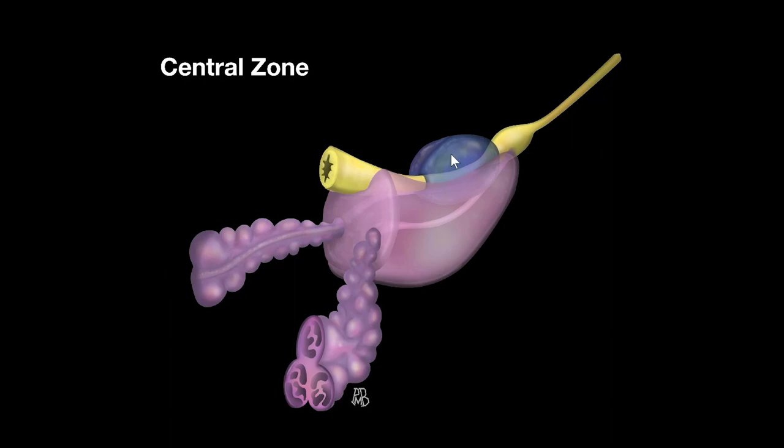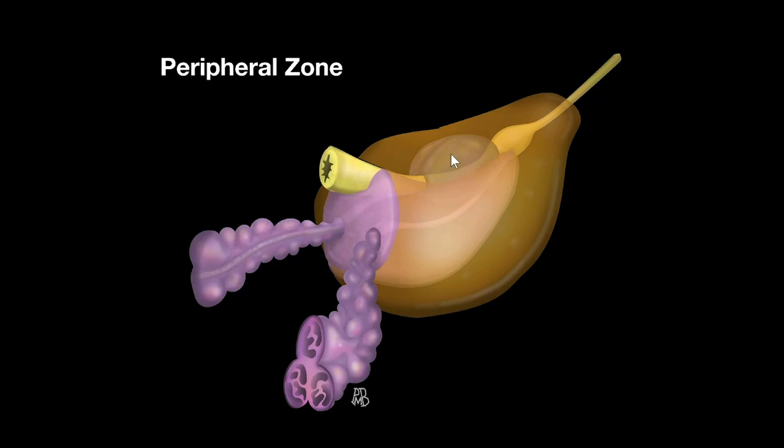Let's keep going. The next layer we're going to put in is the peripheral zone, and it's kind of like an envelope. Notice that the peripheral zone has a very distal apical component. Tumors that exist around here can have a big impact on the urethra, but they can also be hard to reach, hard to see, and a little more challenging to biopsy.